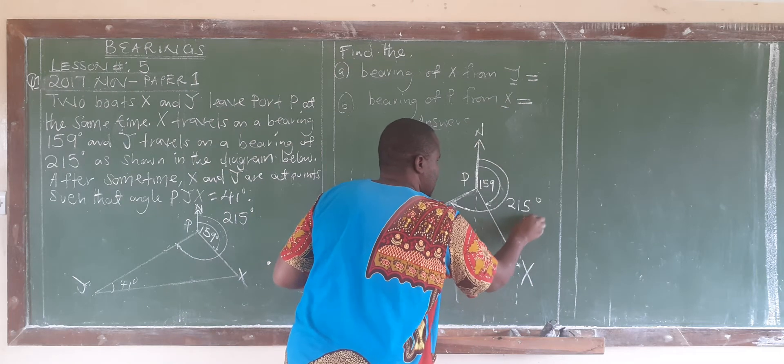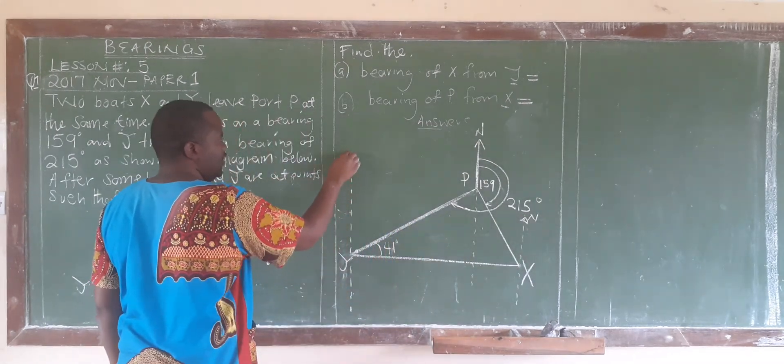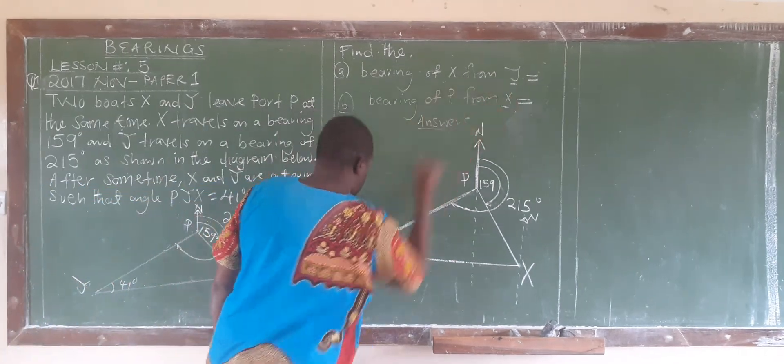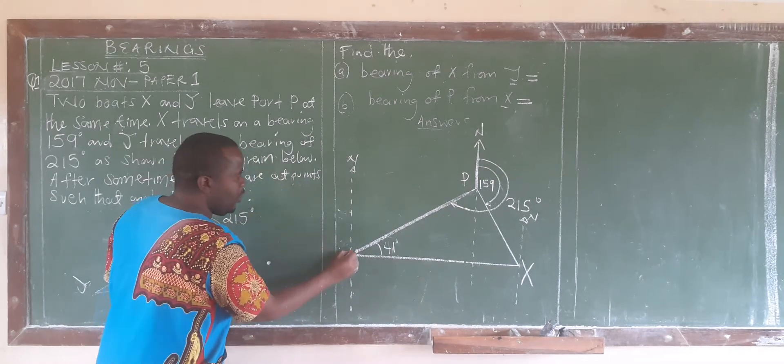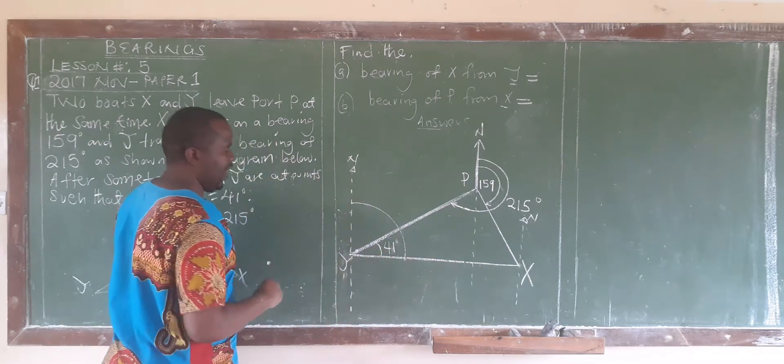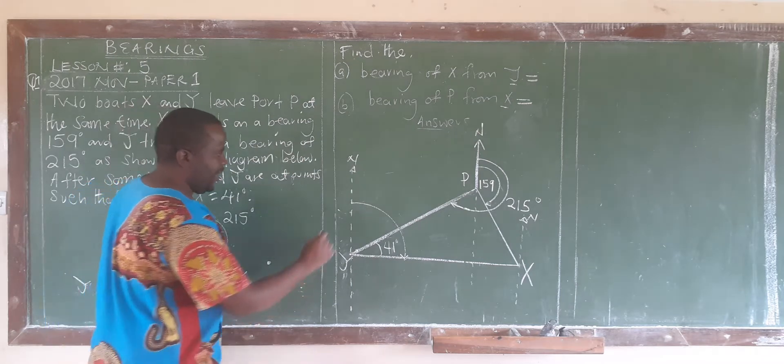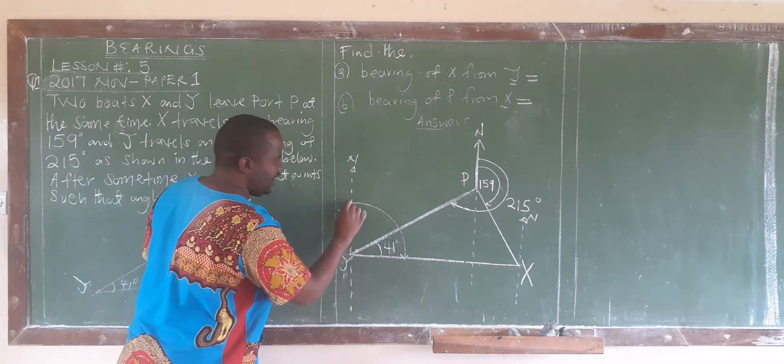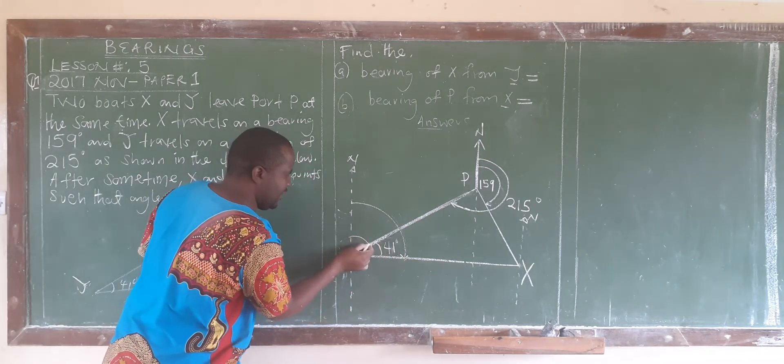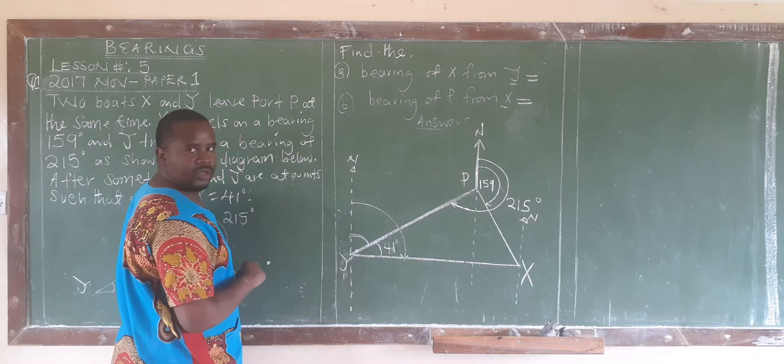This might be our north for X, then this one, the north for Y is right here. Now, we want to find the bearing of X from Y. The reference point is Y. You go to point Y, then move from the north in a clockwise direction until you meet the line X. So that is our bearing. For us to find this, we need to know what this angle is.